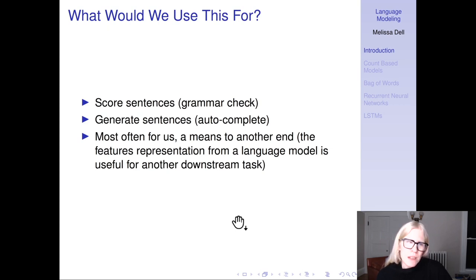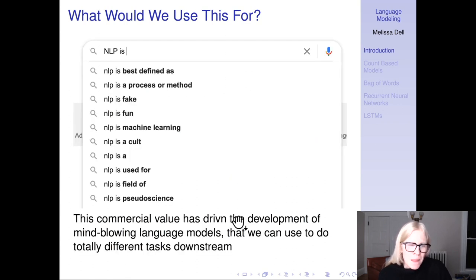What would we use this for? You could use it for grammar check or autocomplete, but most often it's a means to some other end. When we have these deep neural language models, they provide us with representations of text that can be used for other NLP tasks. Language modeling has a lot of commercial value, which has been an important driver of mind-blowing language models that we can use to do a variety of downstream tasks.